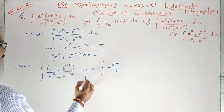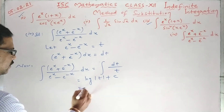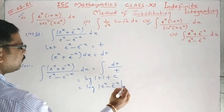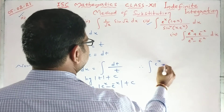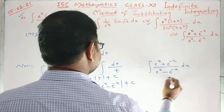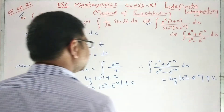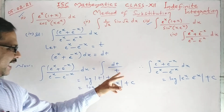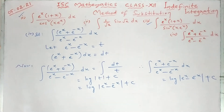Now, integration of 1 over t is log mod t plus c. So log mod t means — since my assumption is t equals e^x minus e^(minus x) — the answer is log mod (e^x minus e^(minus x)) plus c. Therefore, the integral of (e^x plus e^(minus x)) upon (e^x minus e^(minus x)) dx equals log mod (e^x minus e^(minus x)) plus c. That is the end of the solution. Remember: integration of 1 over x is log mod x. Thank you.